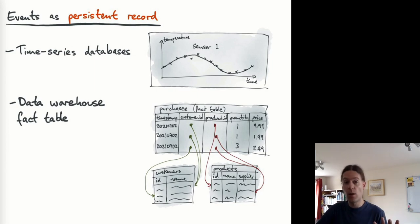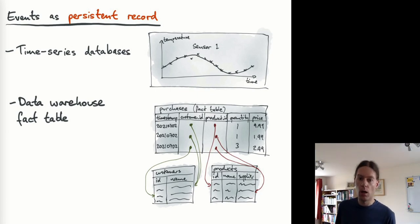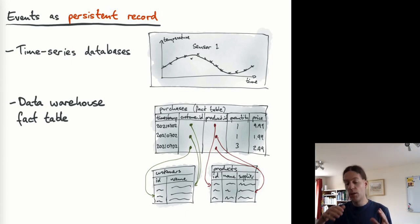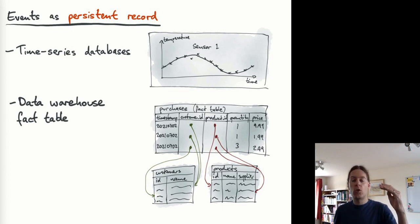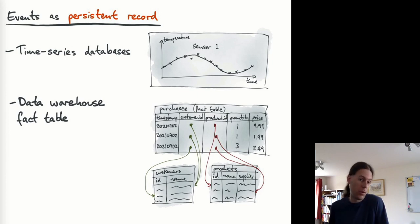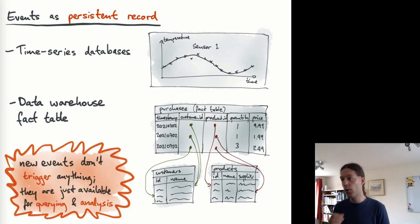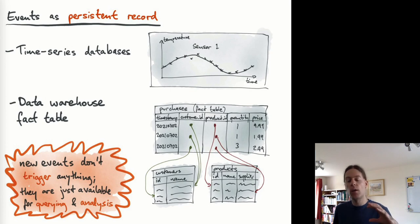A similar pattern occurs in data warehousing for business analytics. A standard way of representing sales data is a star schema or snowflake schema, where there's one table in the middle holding all the facts or events, usually time-stamped — for example, how many pieces of which product were sold to which customer at what price. Each row in this fact table is really an event, a record that something happened. In these cases it's not a notification mechanism, it's a way of ensuring data is recorded for later querying and analysis.